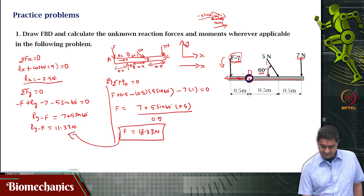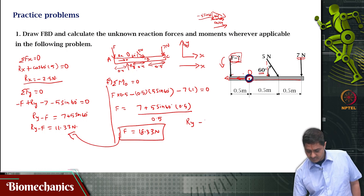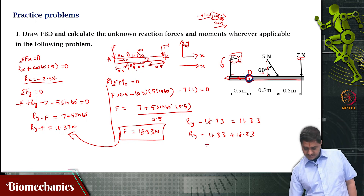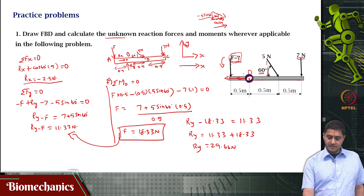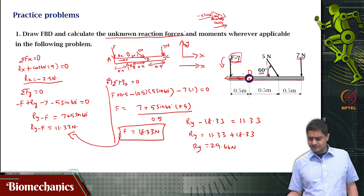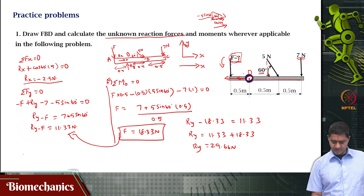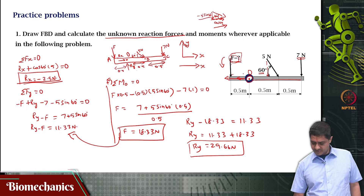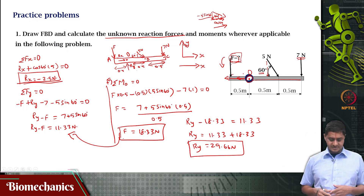Solving for F: F = (7 + 5 sin60 × 0.5) / 0.5, which gives F = 18.33 Newtons. Substituting into the Y equation: RY minus 18.33 = 11.33, so RY = 11.33 + 18.33 = 29.66 Newtons. So the final answers are: RX = minus 2.5 Newtons, RY = 29.66 Newtons, and F = 18.33 Newtons.